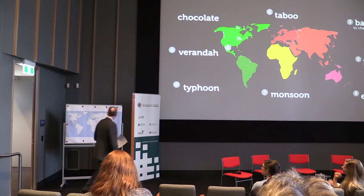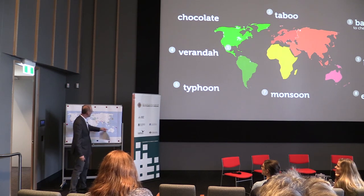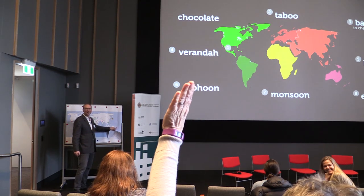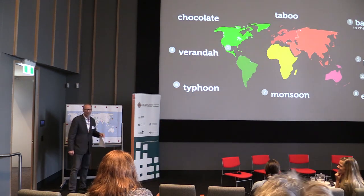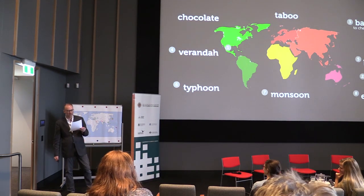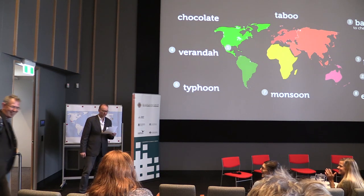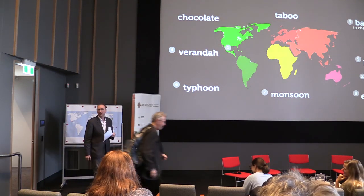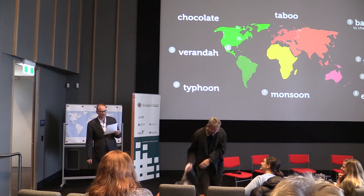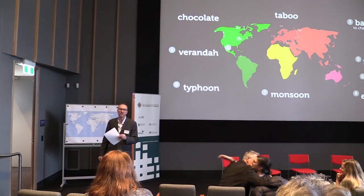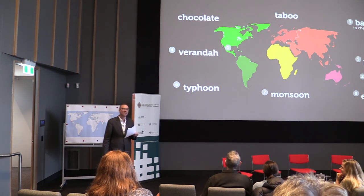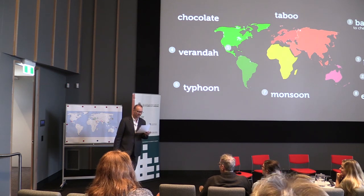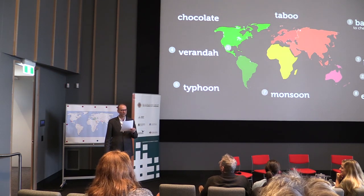Number two: 'taboo.' One guess, and it's just about right. This is a borrowing from Tonga. It first appears in the diary of Captain James Cook. If you've followed the other activities in this series, you won't be surprised to find that this Tongan word 'tabu' appears in Maori as 'tapu' and in Hawaiian as 'kapu' — that's just the way those languages work.